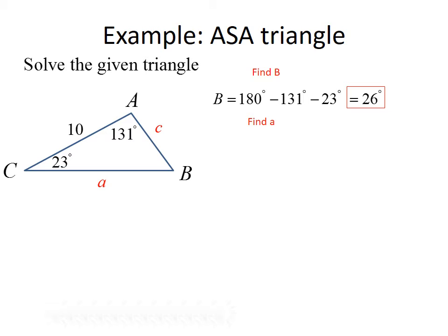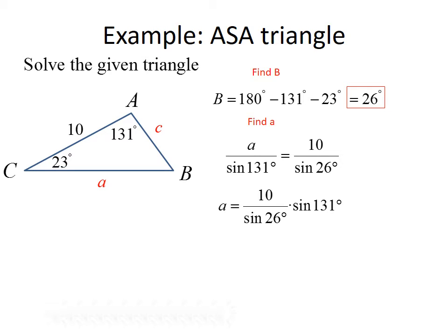Now that we know all angles, we can find the missing sides. We start with side a, using the given side b (length 10) and angle B in our formula. Using the Law of Sines: a divided by sine of 131 degrees equals 10 divided by sine of 26 degrees. Solving for a by multiplying both sides by sine of 131, we get a equals 10 over sine of 26 times sine of 131, which is approximately 17.2 units.